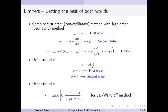We have introduced a parameter called r. R is basically the ratio of the change happening between neighboring cells: the average value at i minus the average value at i-1, divided by the average value at i+1 minus the average value at i. This is a ratio of the values of the surrounding cells.